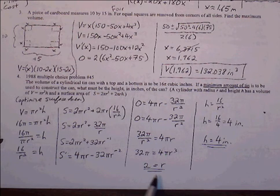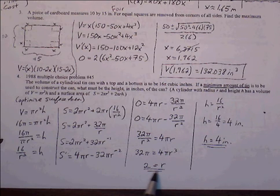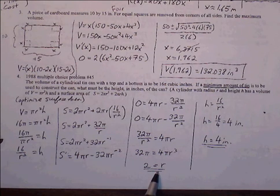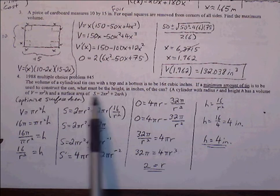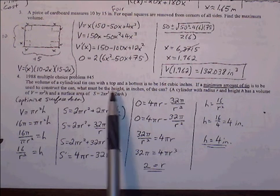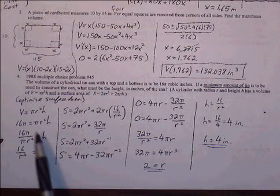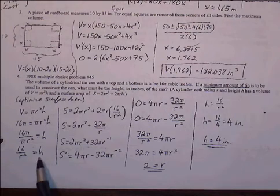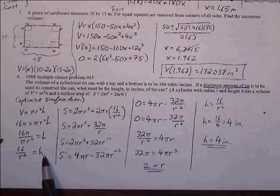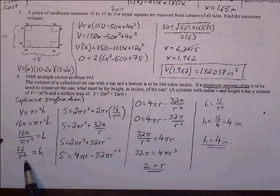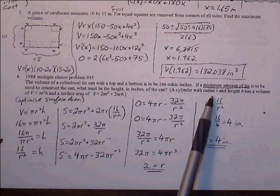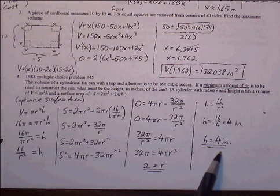The optimal radius is 2 inches. To find the height, we use h equals 16 over r squared: plugging in r equals 2 gives h equals 16 over 4, so the height is 4 inches.